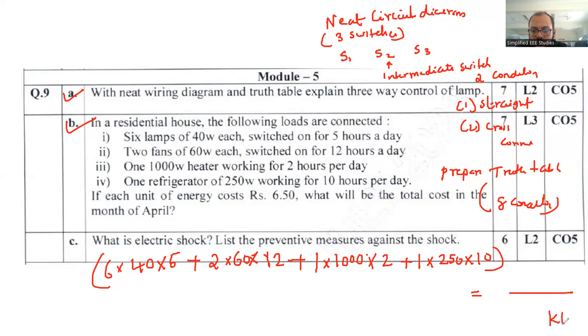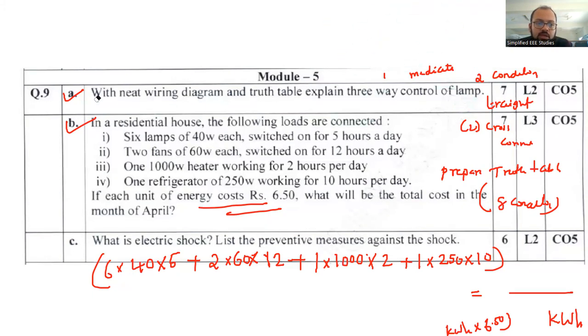If you compute, you will get a definite amount of energy in kilowatt-hour. Then calculate the cost at Rs. 6.50 per unit. Multiply the kWh by 6.50, and you will get the total electricity bill. I'll be showing you the answer.